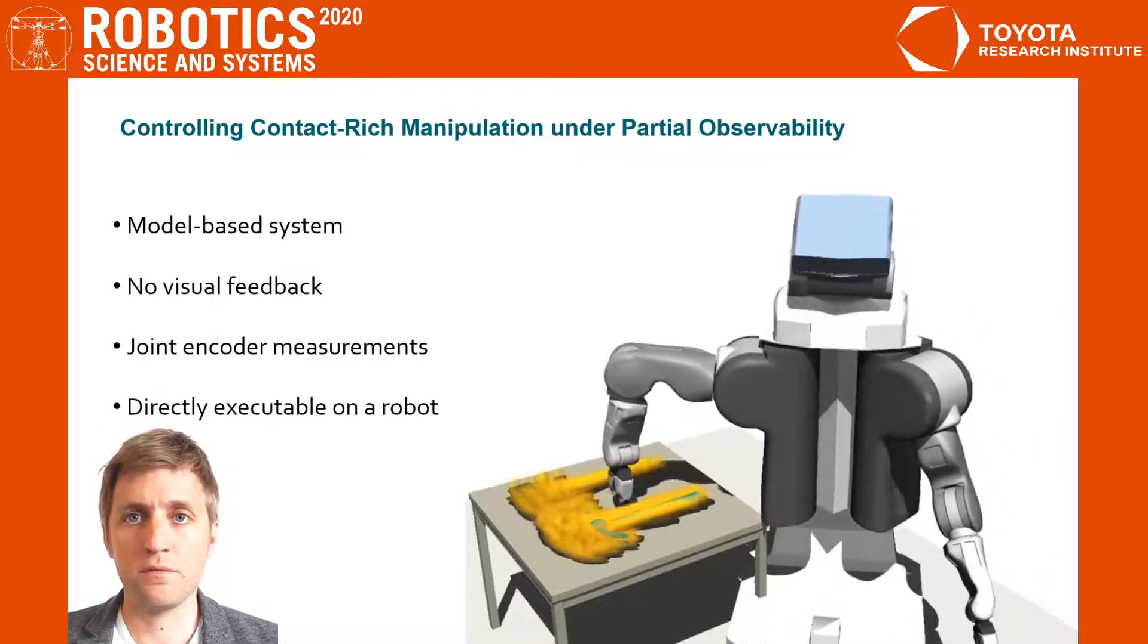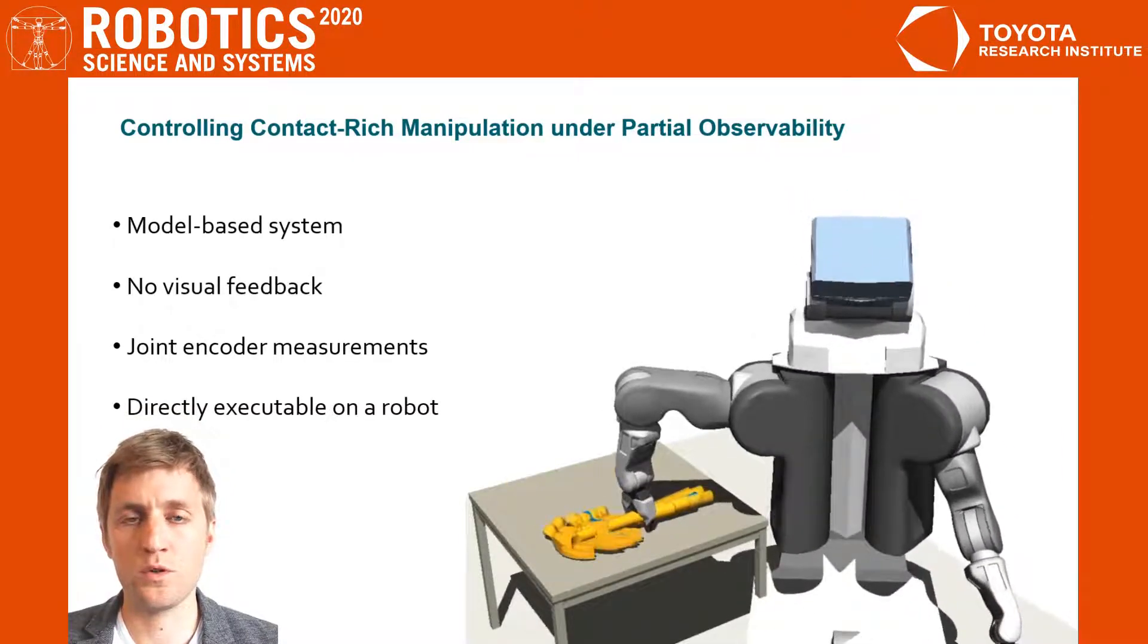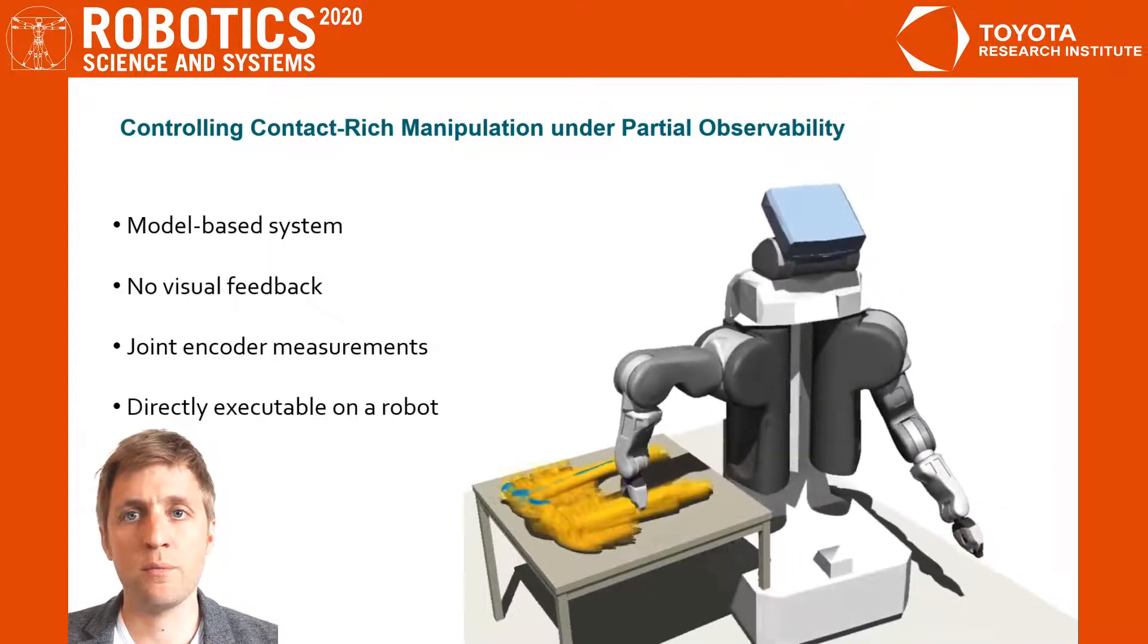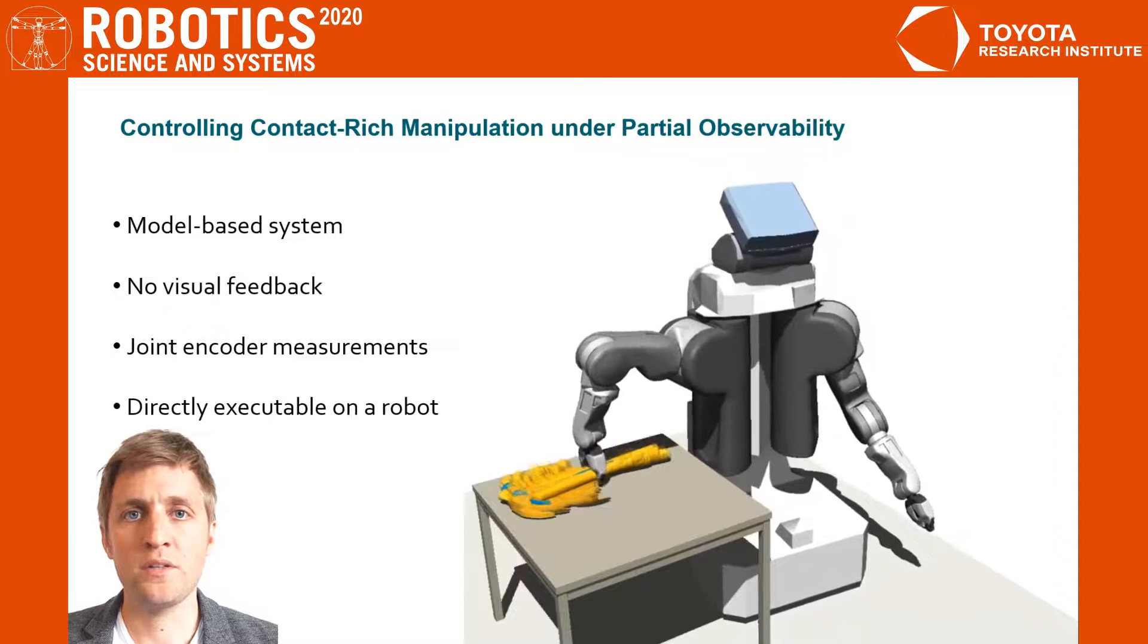We present a model-based system for solving manipulation tasks with coarse priors. It outputs directly executable high-frequency motion commands and uses only joint encoders as feedback.